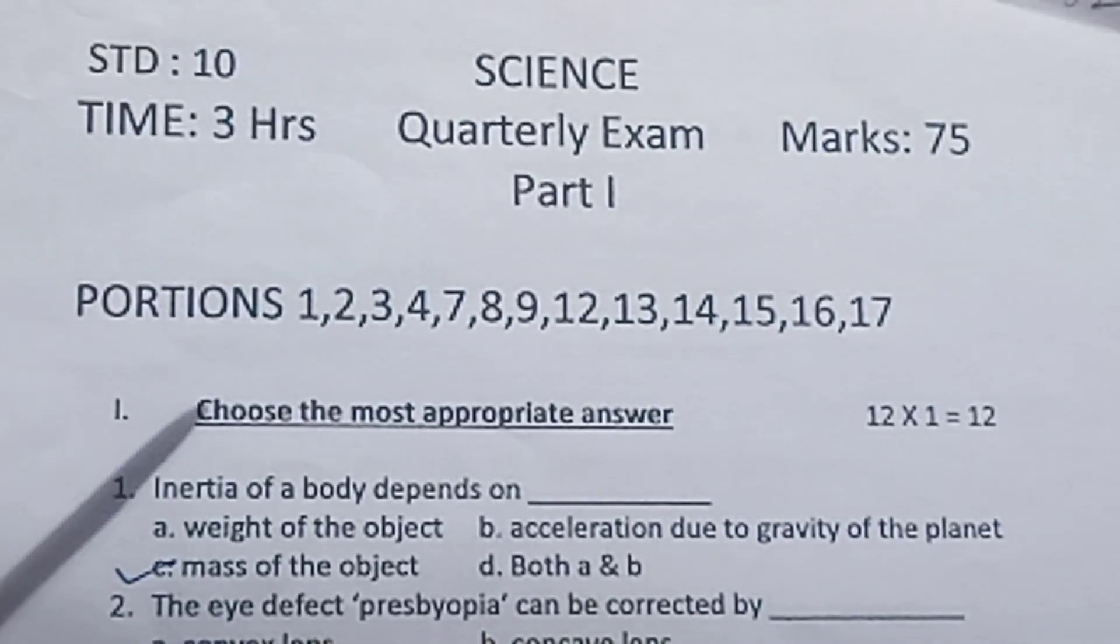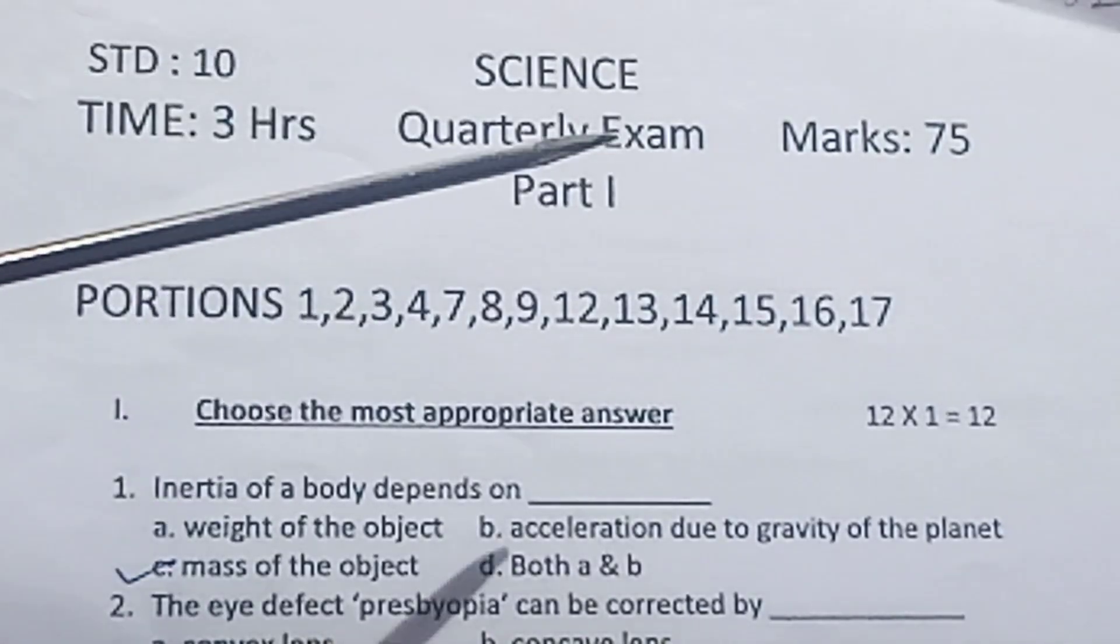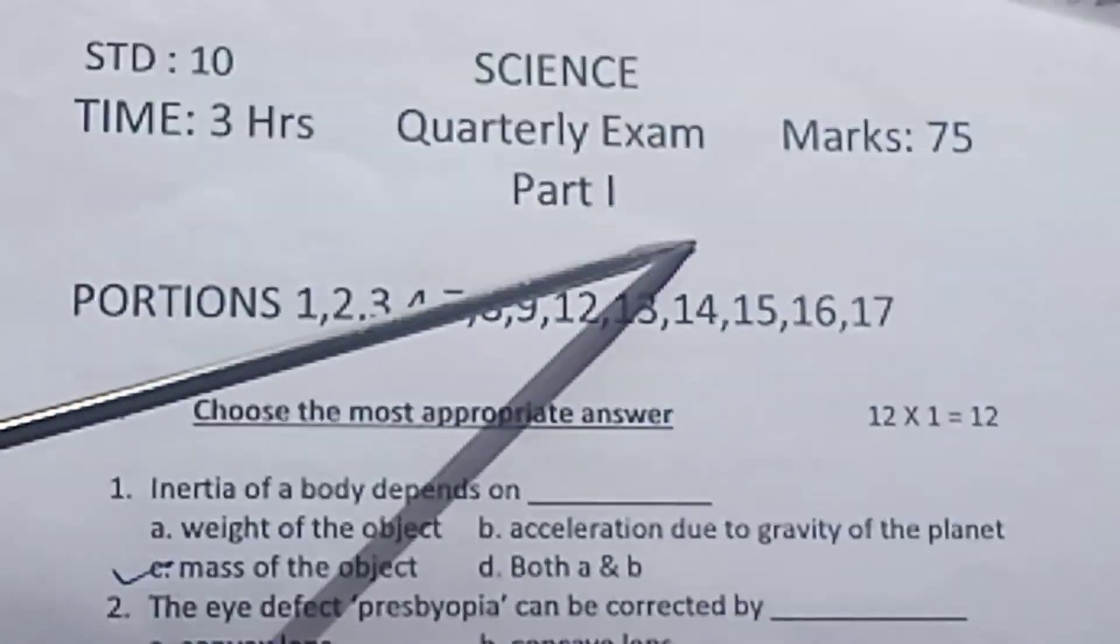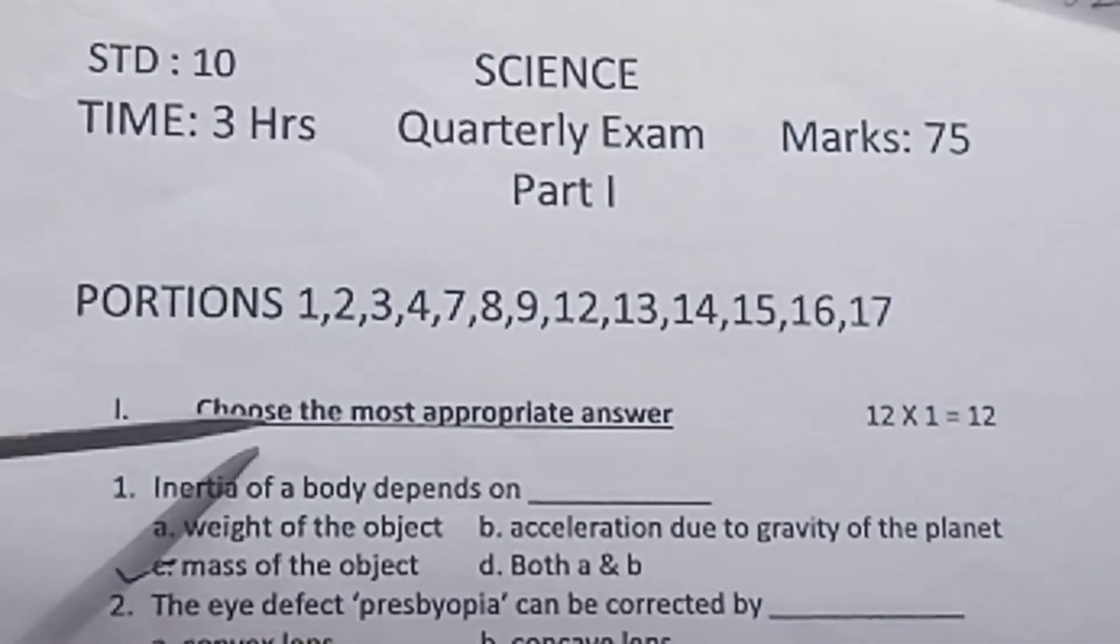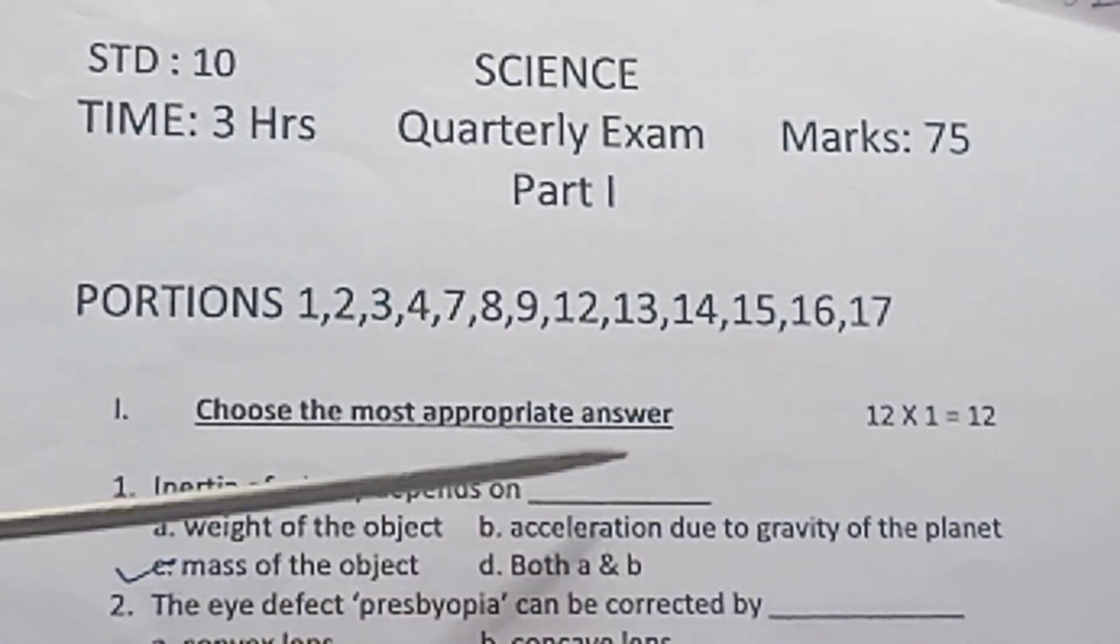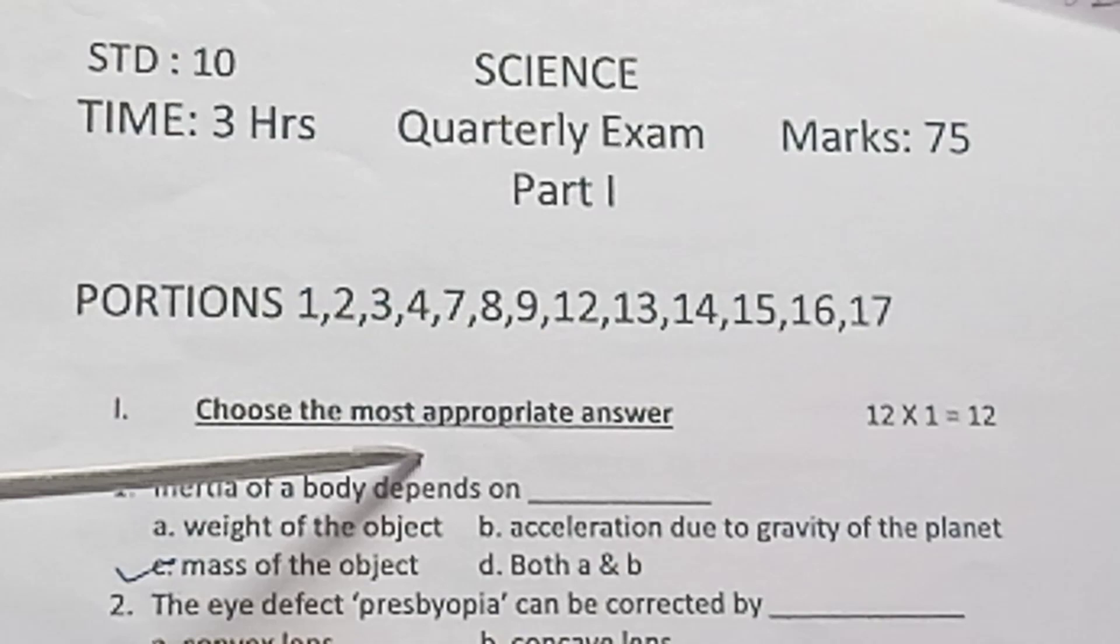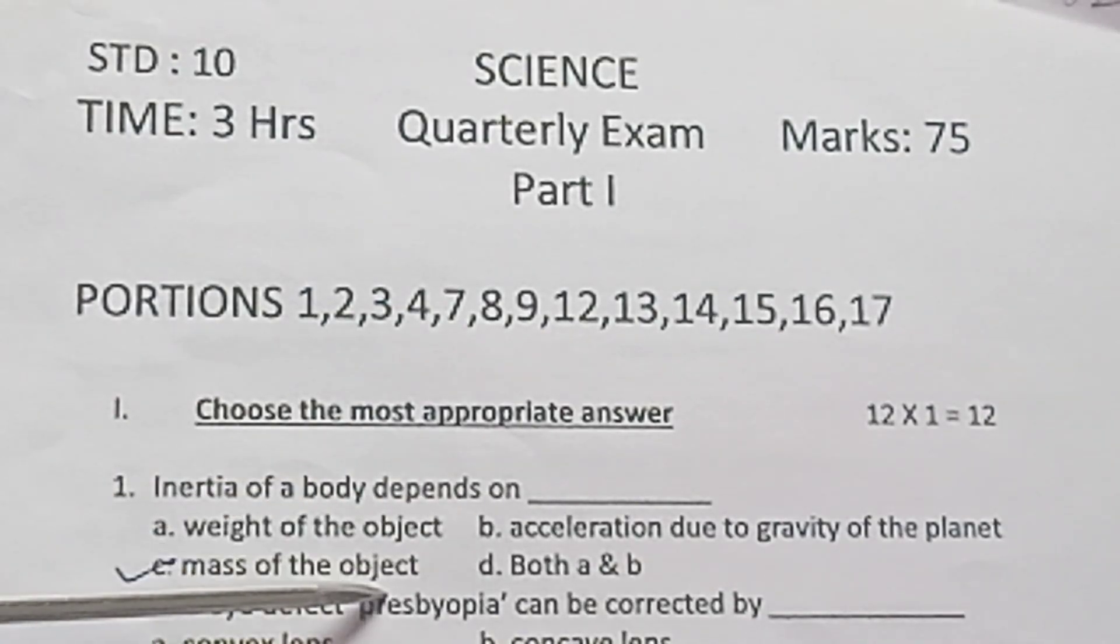Standard 10 Science quarterly model exam answer key. Marks: 75. Part 1: Choose the most appropriate answer. 12 into 1 is 12. Inertia of your body depends on mass of the object.